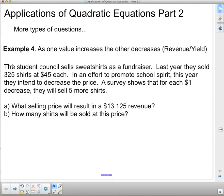And the first one, which we'll call Example 4, since we had three examples last class, is as one value increases, the other decreases. This is a revenue yield problem. Sometimes we talk about revenue, sometimes we talk about yield.